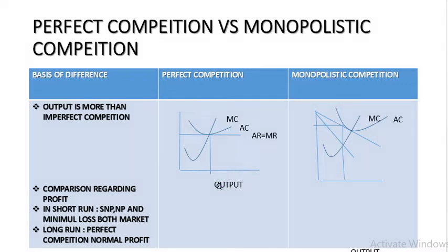Comparison regarding profits: both firms in perfect competition and monopolistic competition — in the short run they could have super normal profit, normal profit, or minimum loss. But in the long run: under perfect competition, it is always normal profit; under monopolistic competition it is also normal profit, but the most efficient firms may earn super normal profit. Under perfect competition there is optimum utilization of resources; under monopolistic competition, production is stopped before the minimum point.